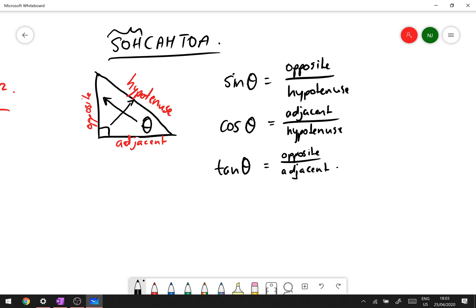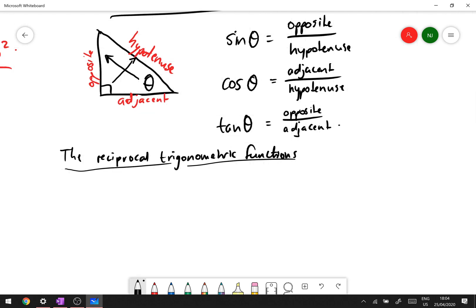So we've done those for ages and ages and ages, but there is a new type of ratio that I want to introduce you to and it's called the reciprocal trigonometric functions. And so the reciprocal trigonometric functions are just, well let's just, well let's do it the long way.